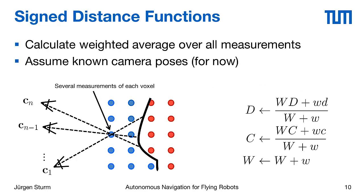When we have multiple depth images, every voxel is observed multiple times. What we do is compute a weighted average over all these measurements, meaning at every voxel we keep the average distance and the sum of all weights. With every new depth image we can just update these two values. We can do the same for color, computing the weighted average of every voxel in color space.